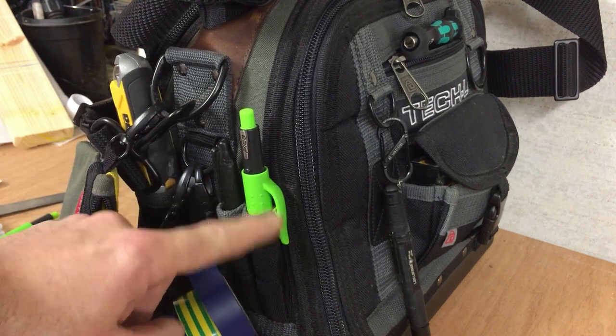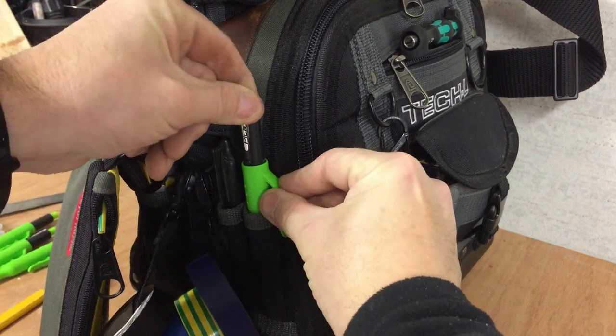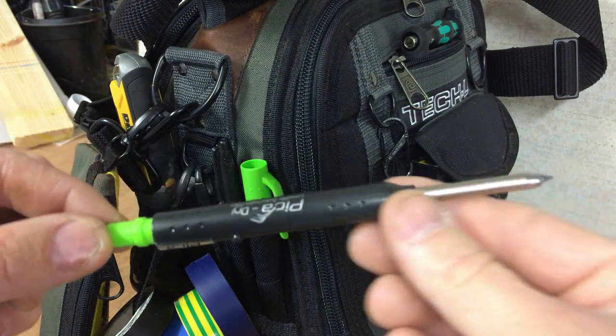So here's the shroud, highly visible, highly secure in the pocket. And the pencil just pulls out like this, so here's a Pica pencil here.